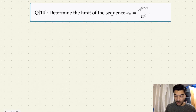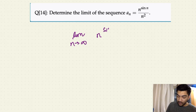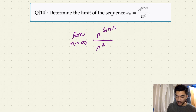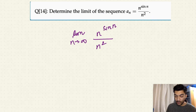In this case, you have to calculate the limit of the sequence for this expression. The limit of the sequence is basically the limit as n tends to infinity for n to the power sine n, over n squared. It's harder for us to directly calculate this limit for this expression.